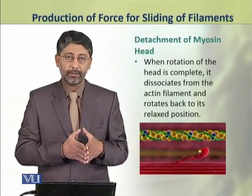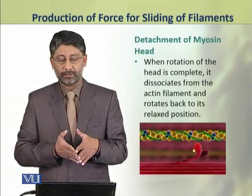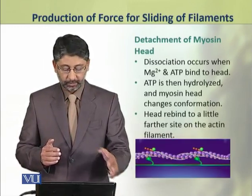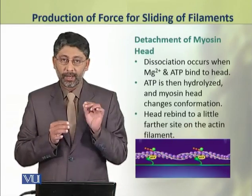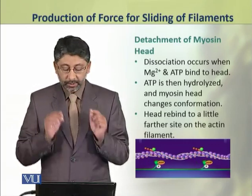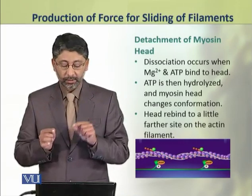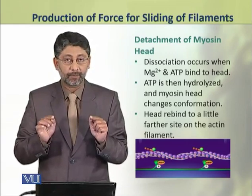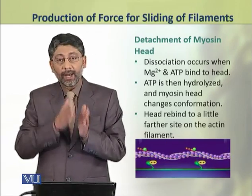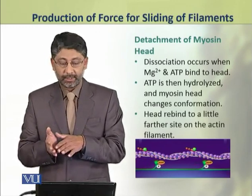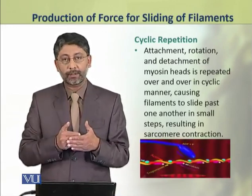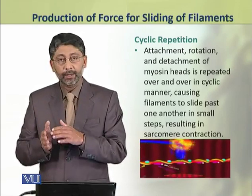When rotation of the head is complete, it dissociates from the actin filament and rotates back to its relaxed position. This dissociation occurs when magnesium ions and ATP bind to the head. In this condition, ATP is hydrolyzed and the myosin head changes its conformation. The attachment, rotation, and detachment of the myosin head occurs in a cyclic manner.